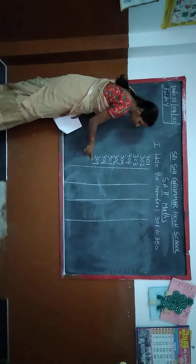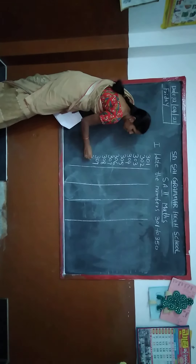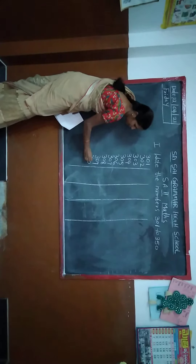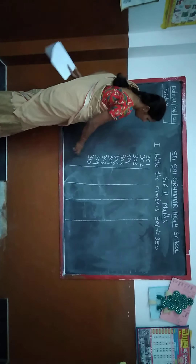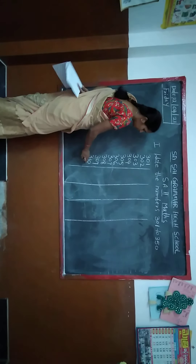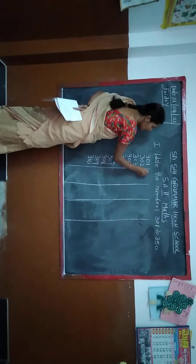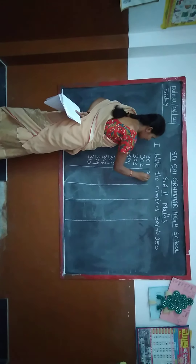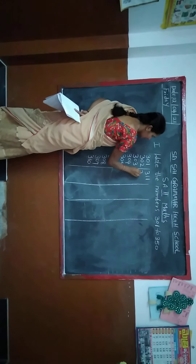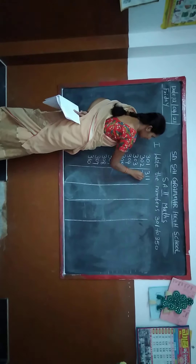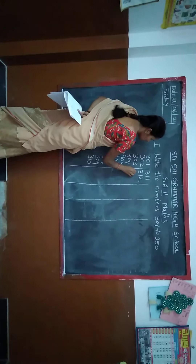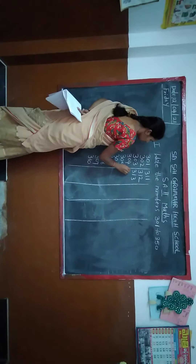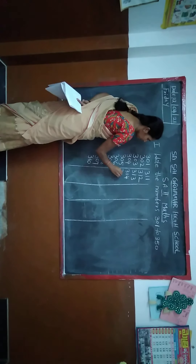309 after? Change the tens. Look there — 310. 311. 312. 313. 340. 350.